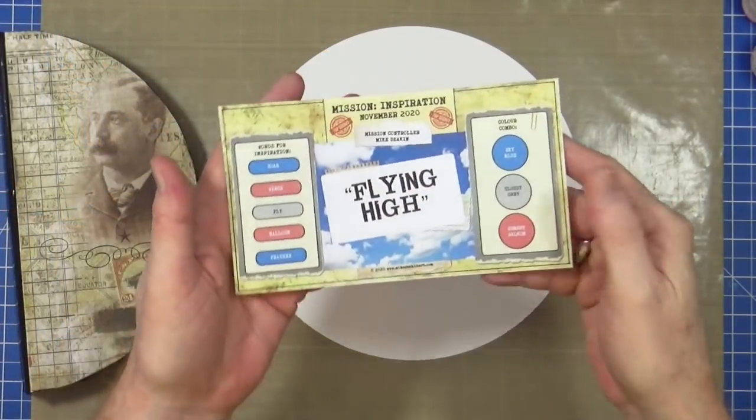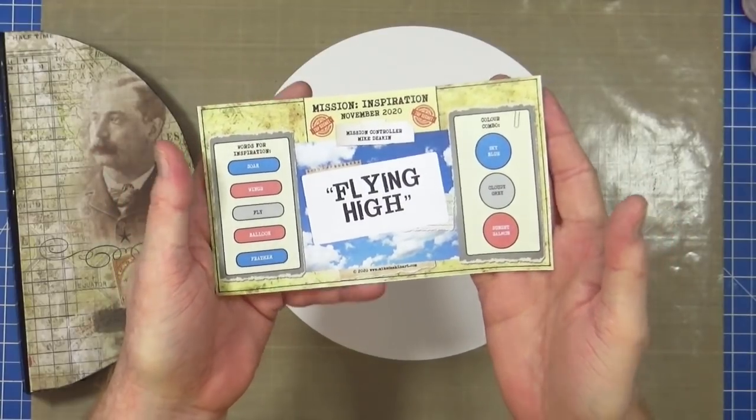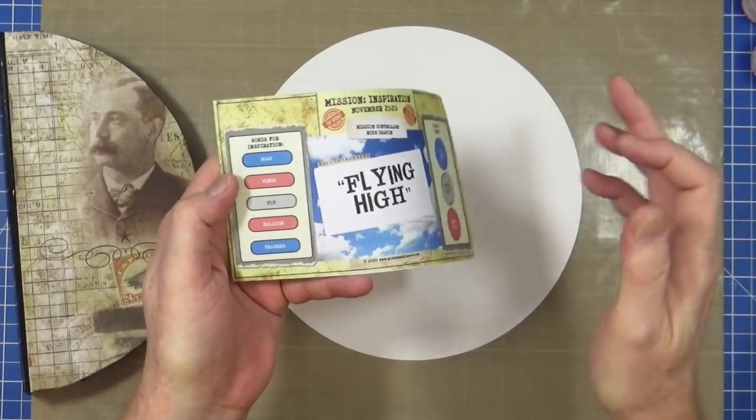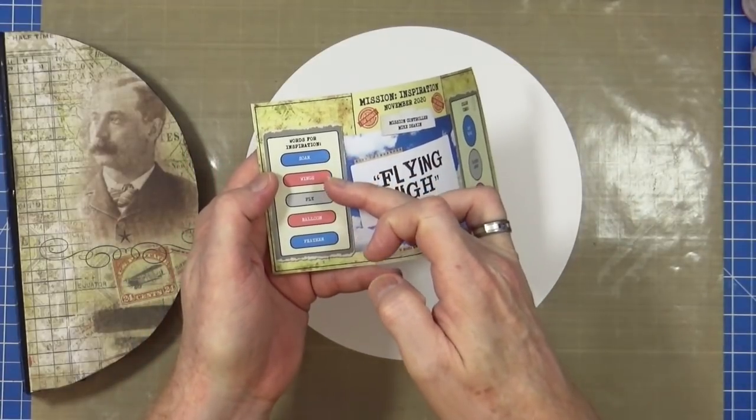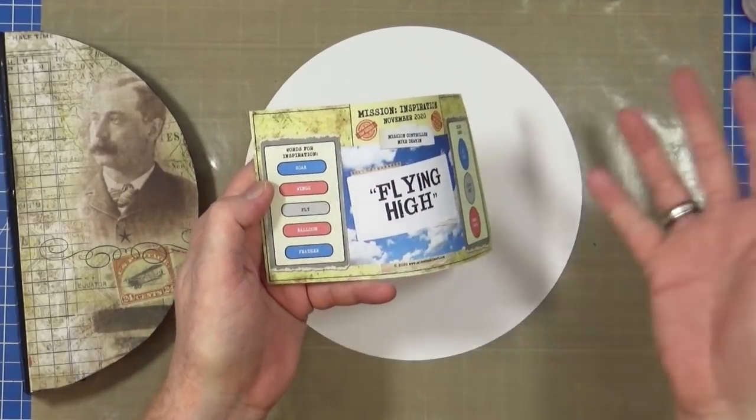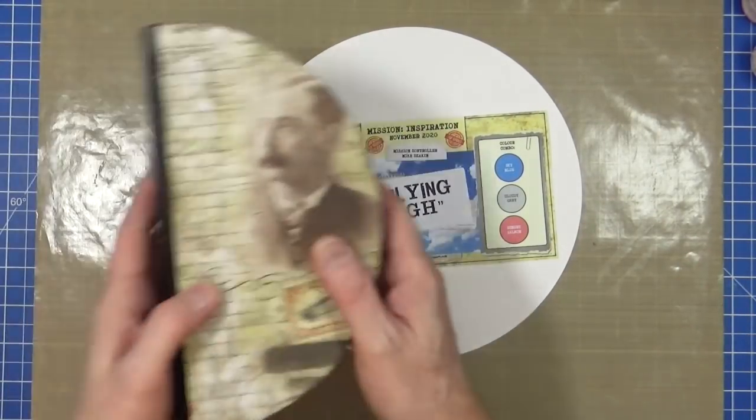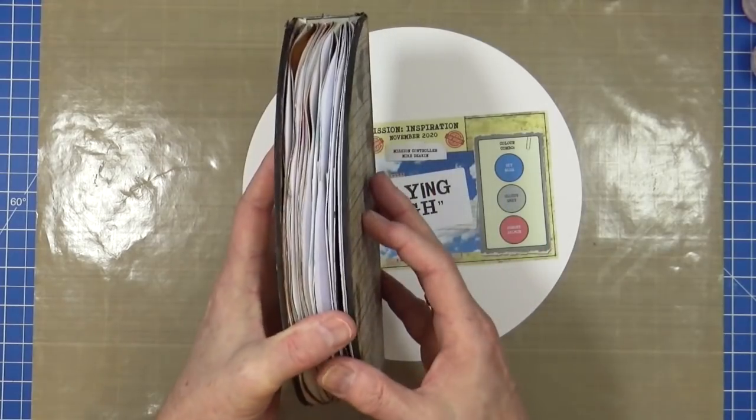Okay, so here is the prompt card for November. So we've got sky blue, cloudy grey and sunset salmon. And the words soar, wings, fly, balloon and feather, which I've already shown you. So I'm going to be working obviously in my Mission Inspiration circle journal.